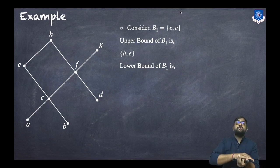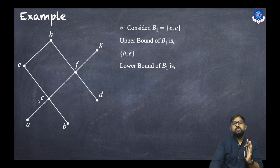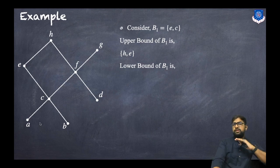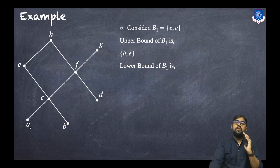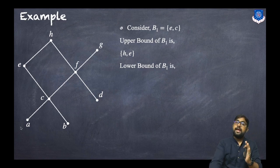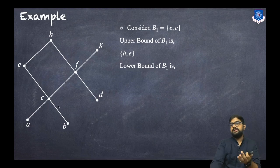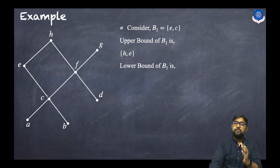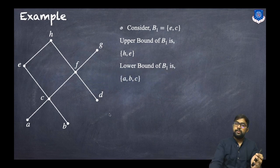For lower bounds, there has to be a relation from the lower points to the given set. The lower points visible in the diagram are A and B. Can we go from A to C? Yes. Can we go from A to E? Yes — first A to C, then C to E. So A is a lower bound. Can we go from B to C and B to E? Yes, so B is also a lower bound. Considering set element C — can we go from C to E? Yes, and C to C by reflexivity. So the lower bounds are A, B, and C.